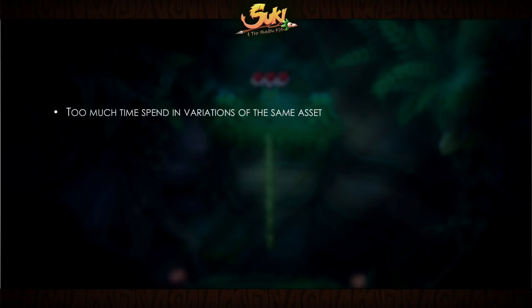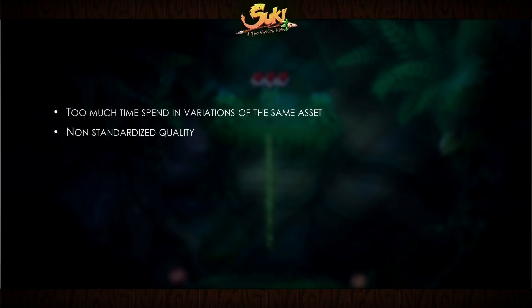Some of the main issues I was having: I was spending too much time doing variations of the same asset. Before, I was modeling trunks by hand, which was very time-consuming. The quality was not standardized — textures would be different sizes each time, trunks would be different thicknesses, so the dragon would not fit. Too many human errors: some colliders were not working, platforms were not flat.